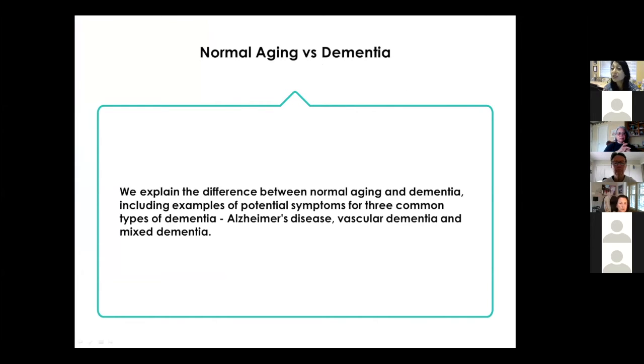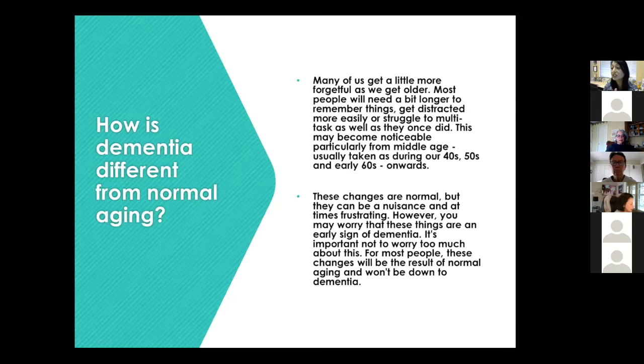Let's talk a little bit about normal aging versus dementia. We can explain the difference between normal aging and dementia with simple symptoms. We have three common types of dementia. The first is Alzheimer's, which we're very aware of. The second is vascular dementia, and the third is mixed dementia.